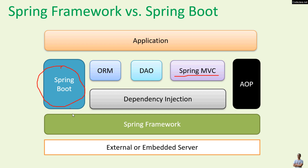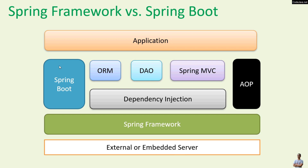Spring Boot is an abstraction layer on top of Spring Framework that simplifies the development of Spring-based applications. A Spring-based application could be running on an external server, or on an embedded server in the case where Spring Boot is used. So Spring Boot is an abstraction layer on top of Spring Framework, and it is just a part of the Spring platform.